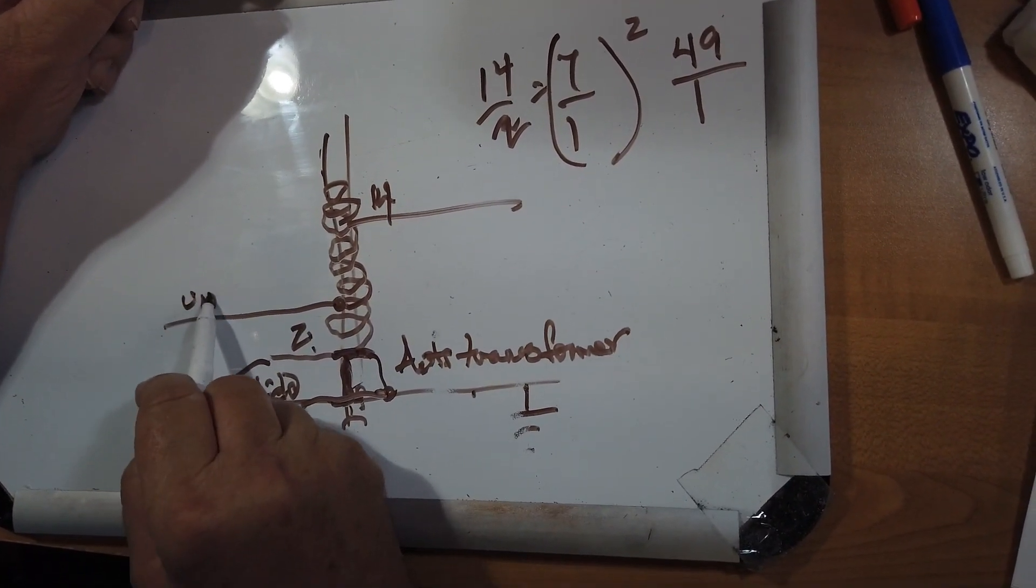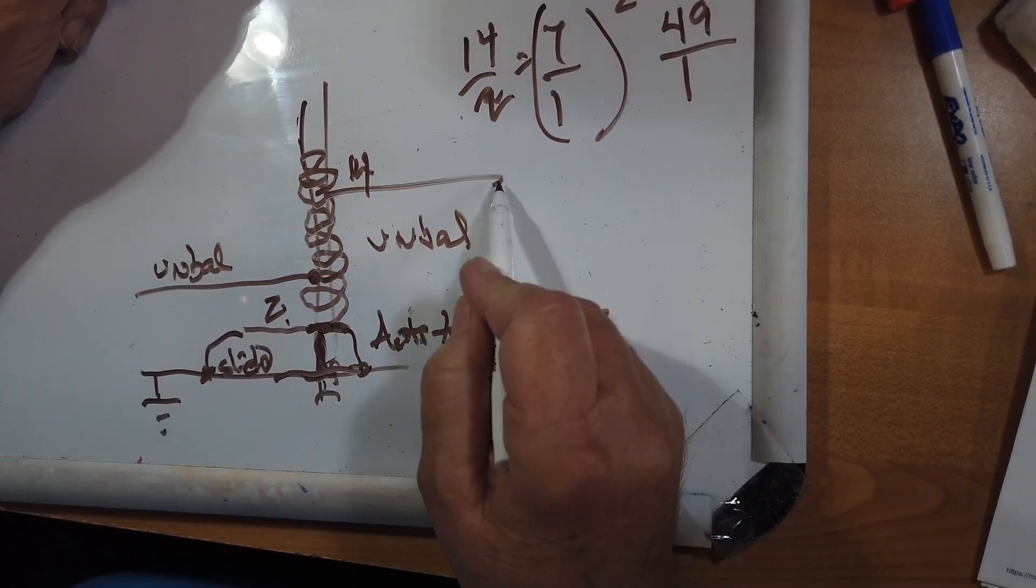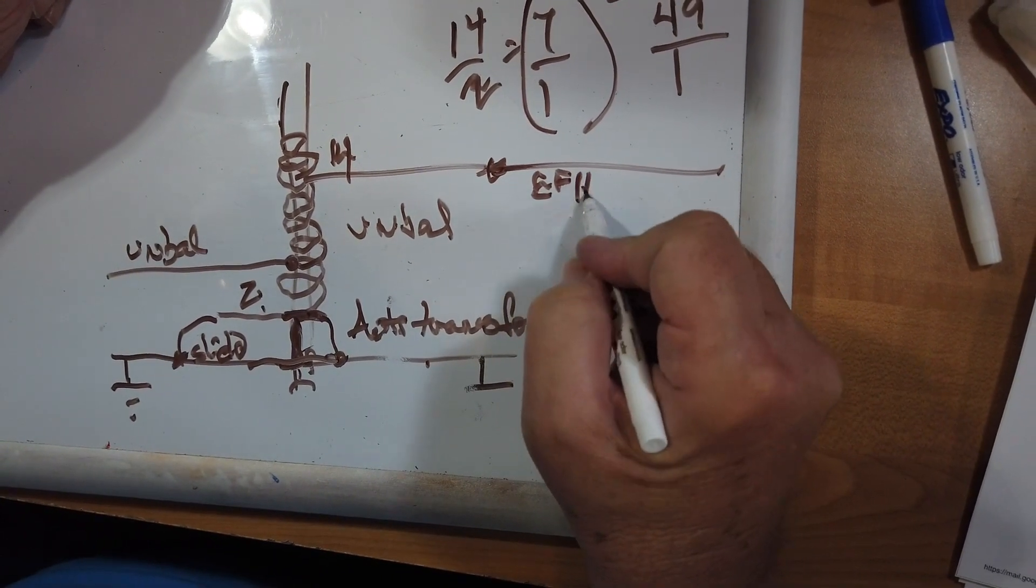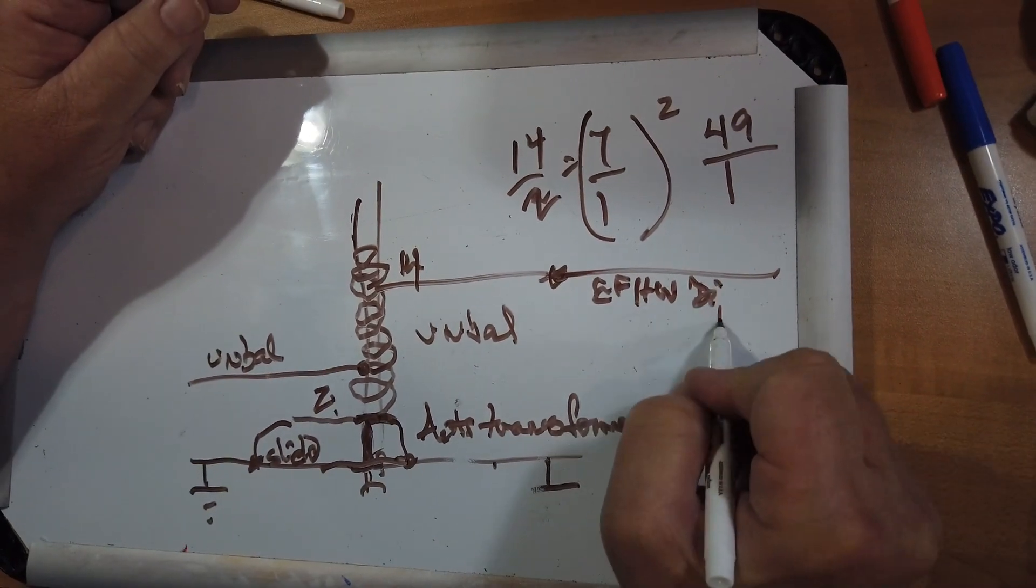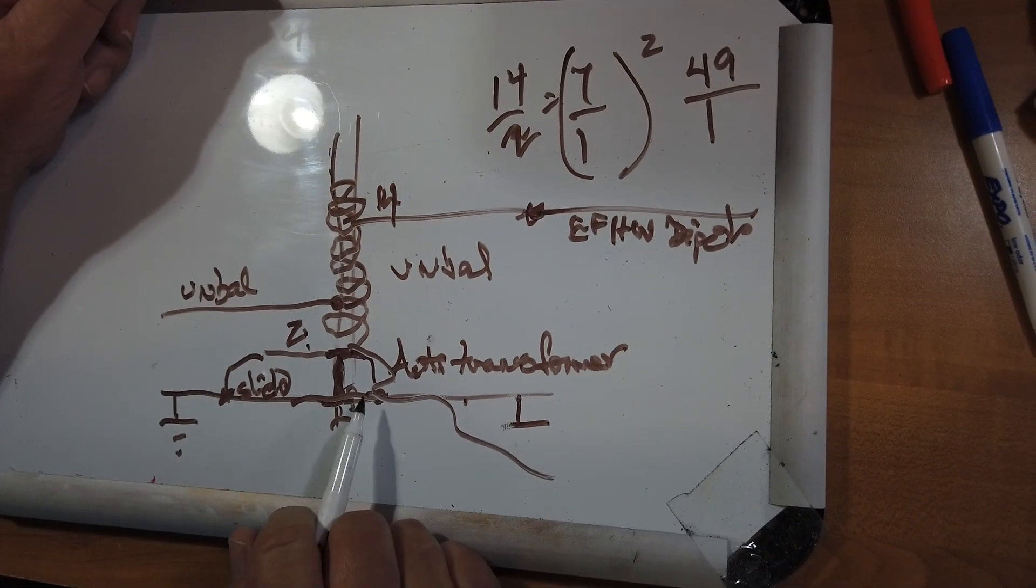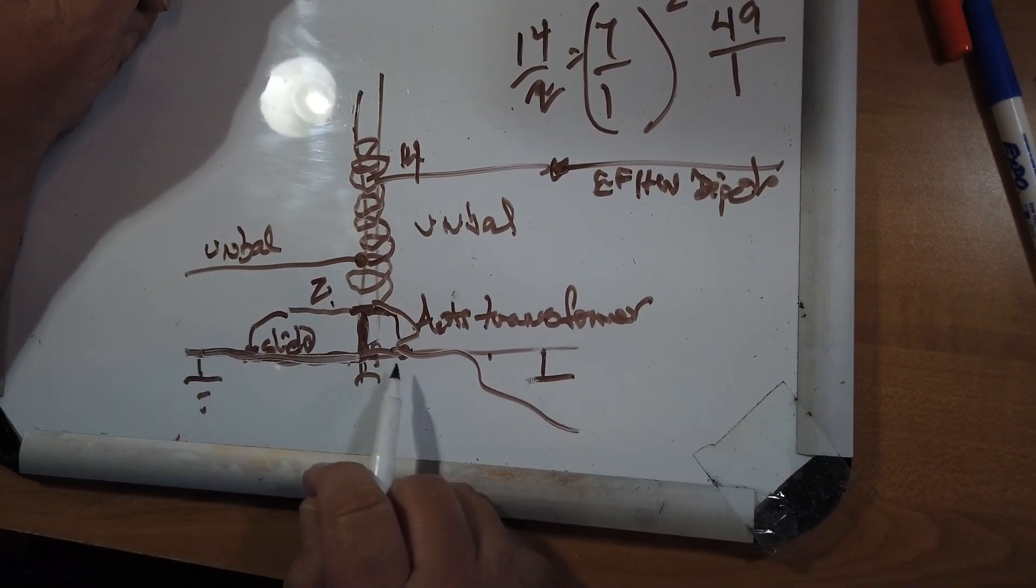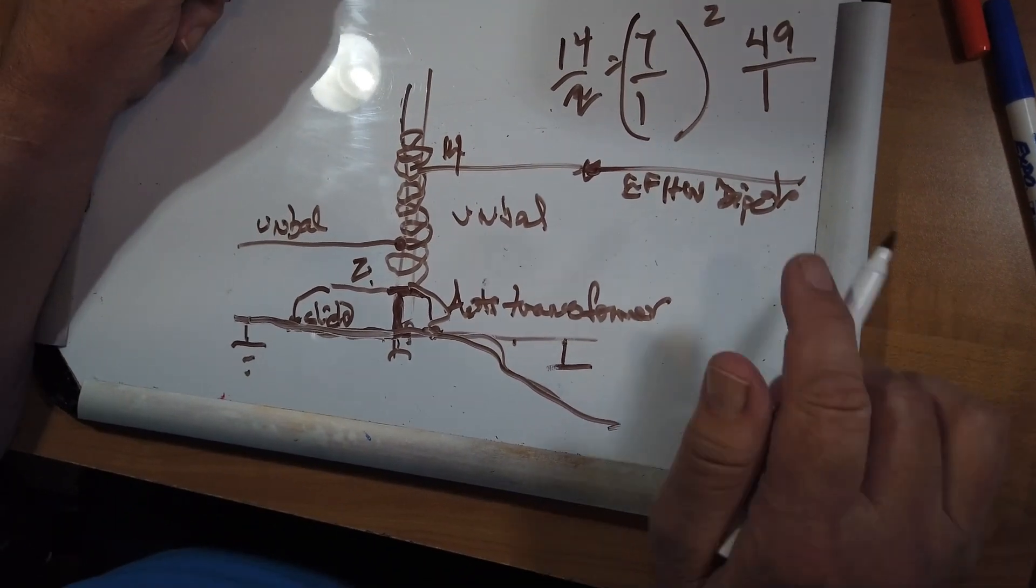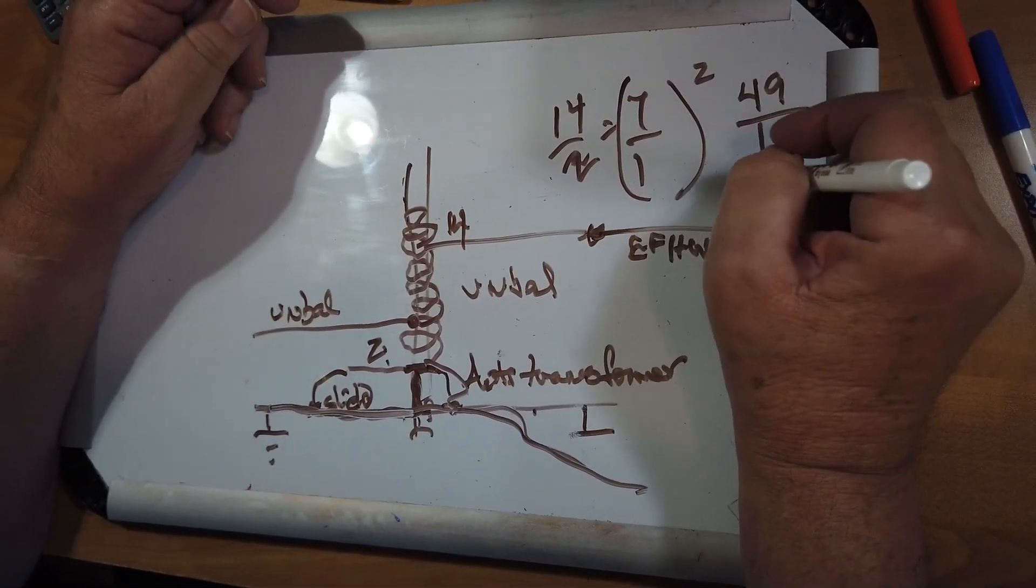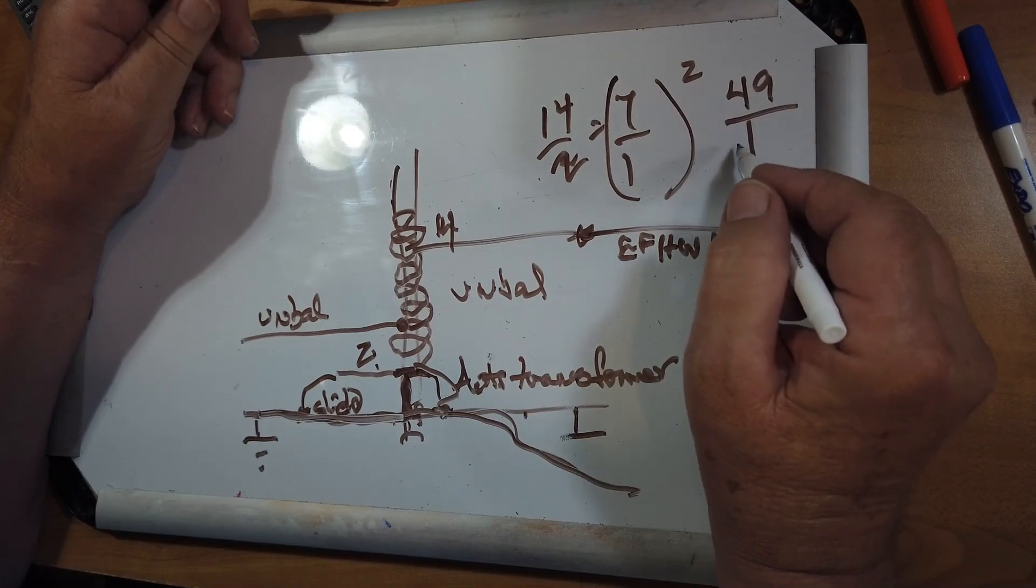This goes to the end of the end-fed half-wave dipole. And the question is, what do you do with this? Well, you can do nothing and just let the shield here be the counterpoise, or you can actually attach a counterpoise. It's up to you.